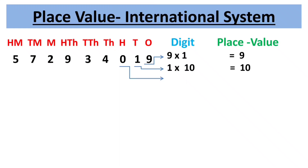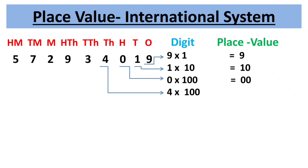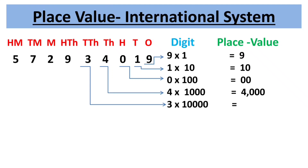Place value of 0 is 0 × 100 = 0. The second period is thousands, consisting of three place values: thousands, ten-thousands, and hundred-thousands. Place value of 4 is 4 × 1,000 = 4,000. Place value of 3 is 3 × 10,000 = 30,000. Place value of 9 is 9 × 1,00,000 = 9,00,000.